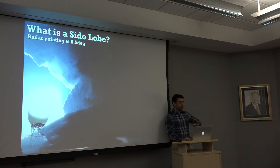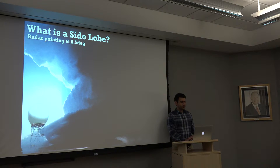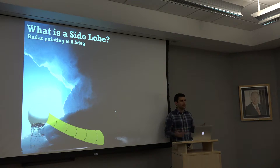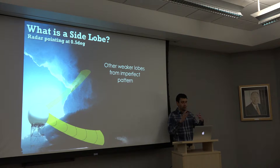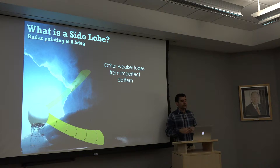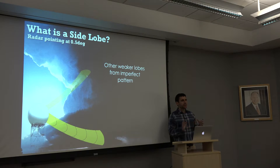Let's imagine our radar is at the base scan, pointing at 0.5 degrees, looking at a nice big supercell in the distance with a wall cloud. We get reflectivity, KDP, CC, all that information back. Due to the construction of the radar — the dish, the shape, the dome — we get these weaker lobes from an imperfect radiation pattern. These are known as side lobes, and they're not just on top; they occur to the sides and beneath as well.